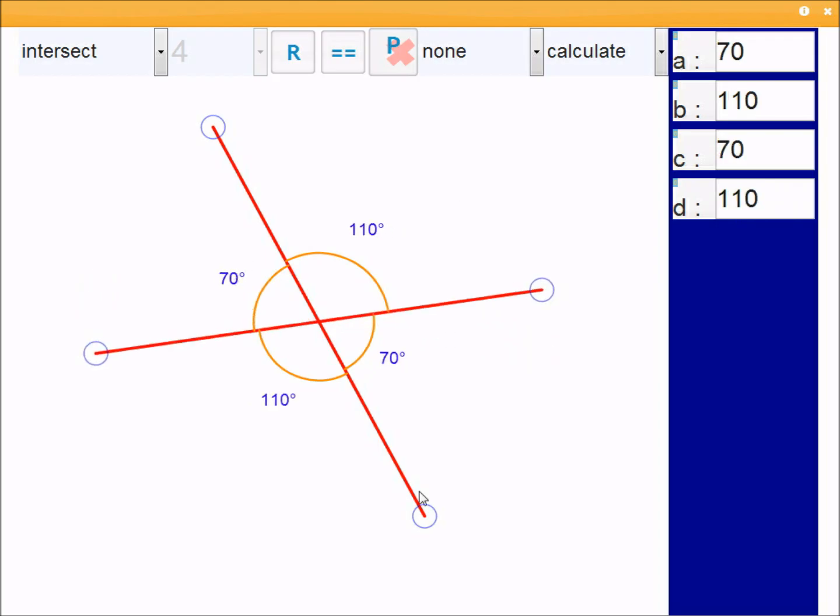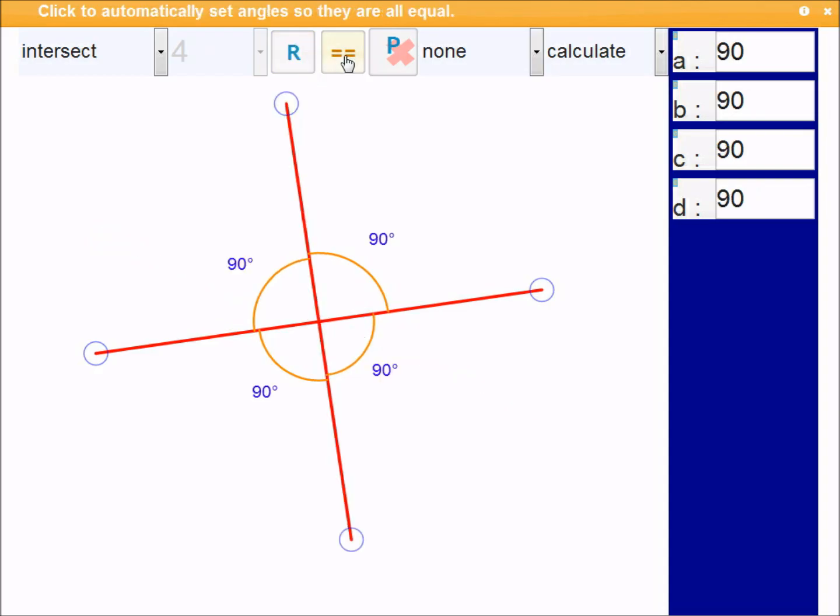So that's angles intersecting with two lines. This control here has been removed, because it's not relevant anymore. You can use equals, but it'll always be 90 degrees.